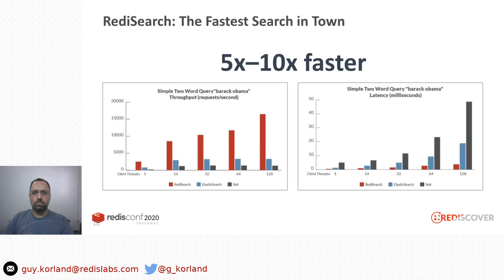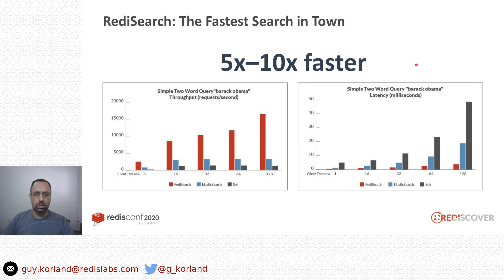That obviously means performance. Redis Search is the fastest search engine in town. You can see it in many benchmarks we published in the past, or you can run them yourself. Redis Search has much lower latency and much higher throughput across many full-text queries, and even in simple secondary index queries.